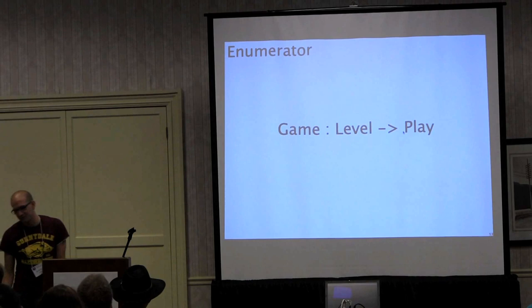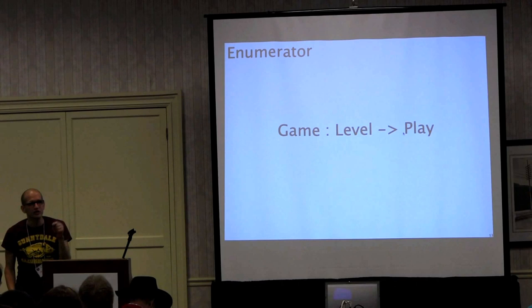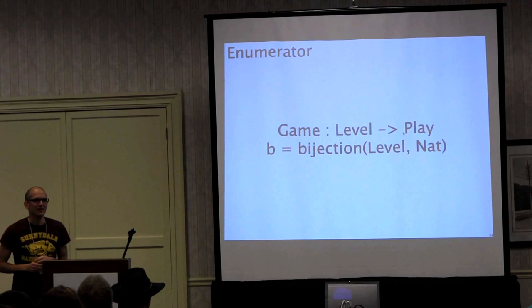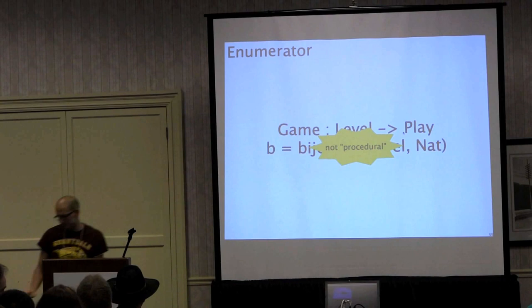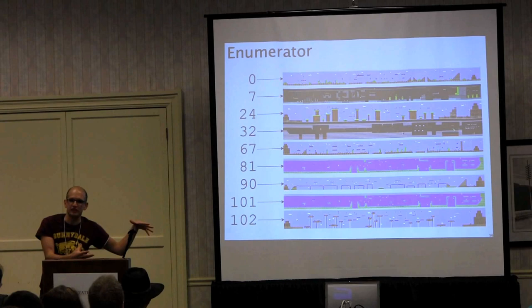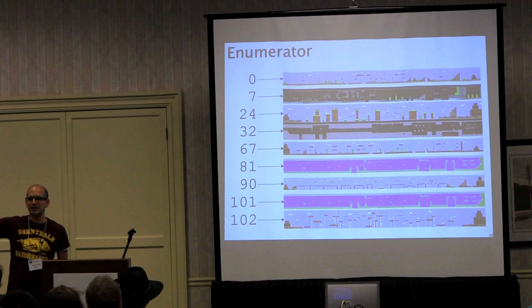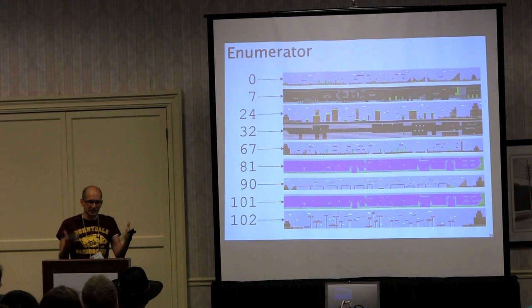A game is a function that takes levels and produces these play experiences. GetBonus makes you put all your levels in bijection with the natural numbers — this is not procedural generation, but actually mapping every single natural number to some level. I provide a language for mapping any data structure, plus invariants about those structures, into the natural numbers, which Robby and I also use for randomly checking Racket programs.